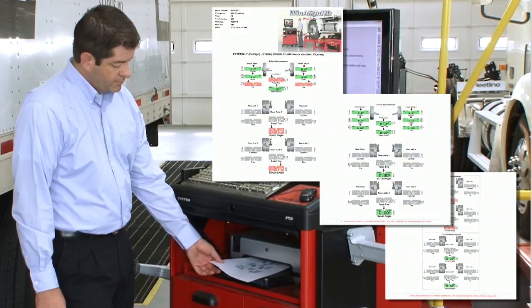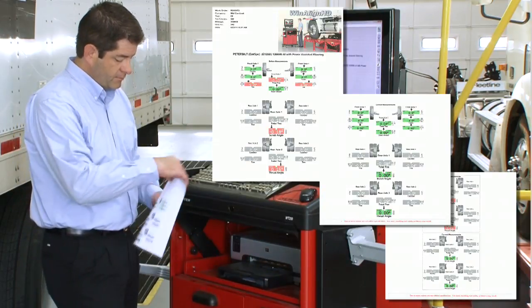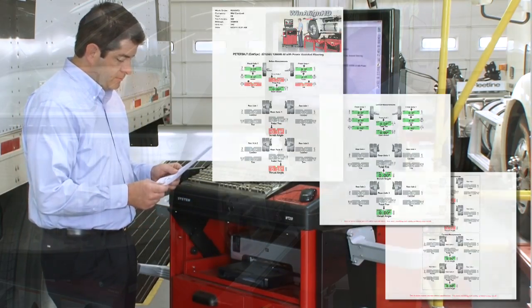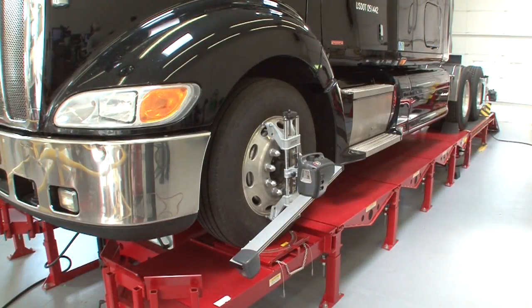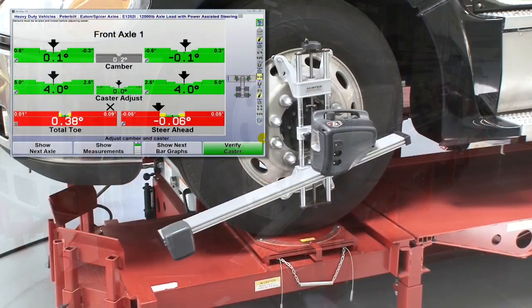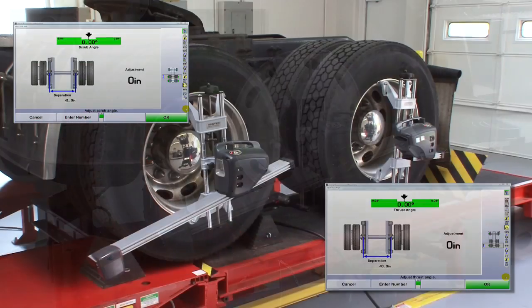Can you print before and after measurements to document the work performed? And most importantly, is the aligner truly a total system, allowing measurement and correction of all axles front and rear?